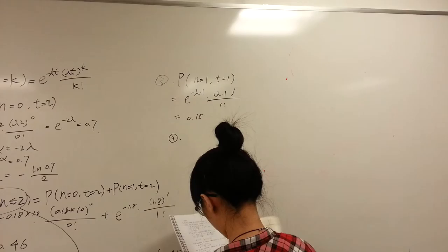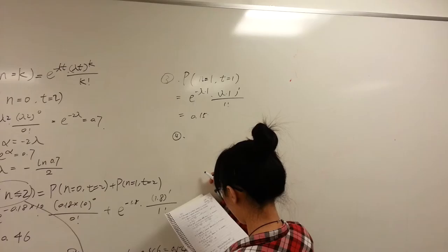The last one is calculate the probability when no customer comes in three minutes.